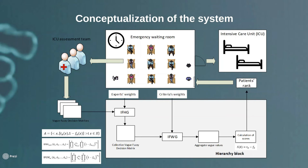Then, using the IFWG operator, we can calculate aggregate vague values. This operator also has the input of the criteria weights. These criteria weights make it possible to highlight the importance of those criteria which are more important in this process.